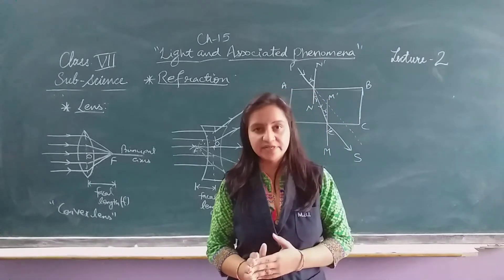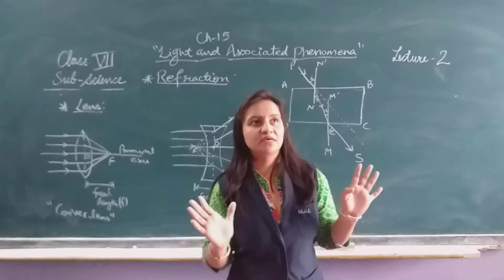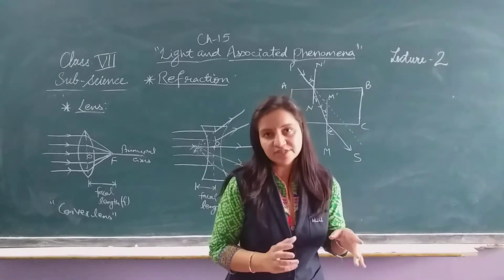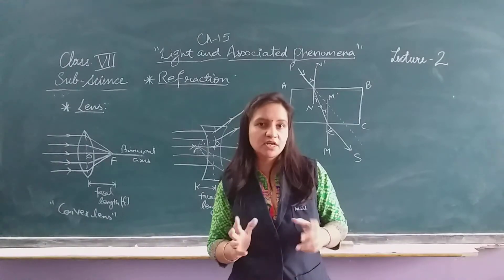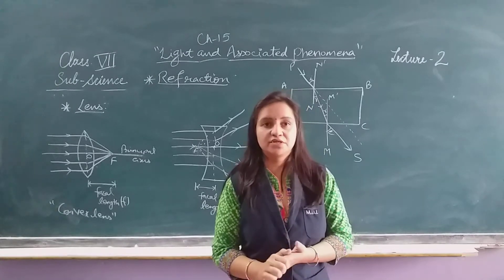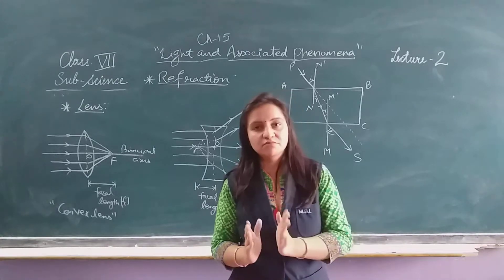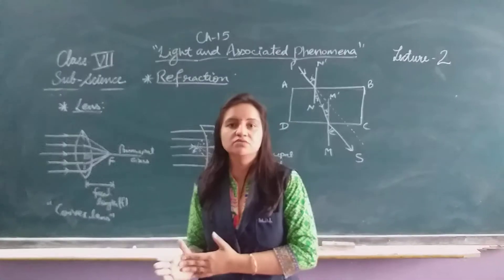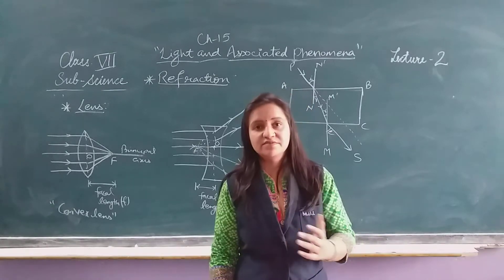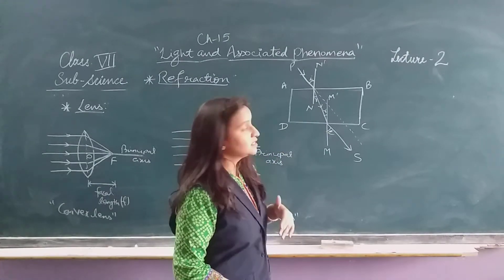When a light ray passes through different mediums — from a rare medium to a denser medium like glass — the density changes. Glass is a denser medium. When a light ray passes from air into glass, the speed decreases. As the density of the medium increases, the speed of the light ray is reduced.